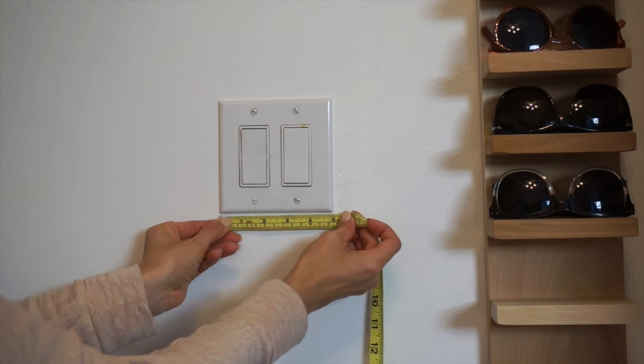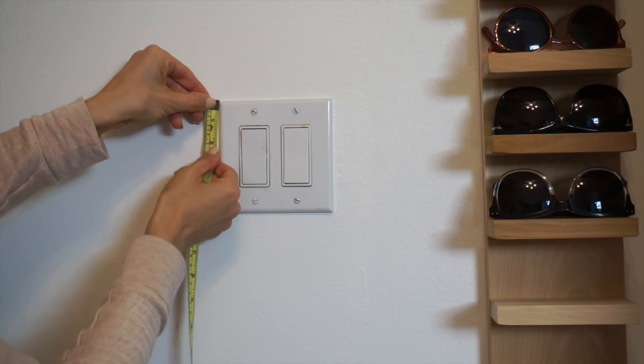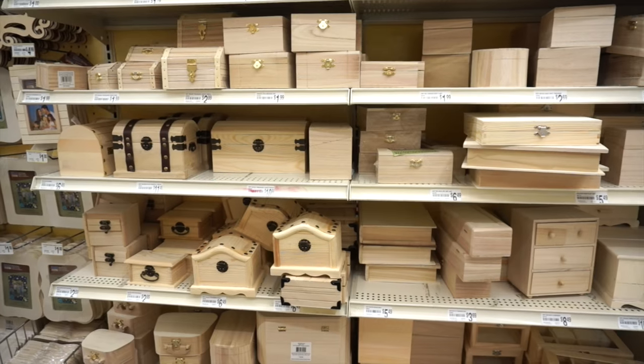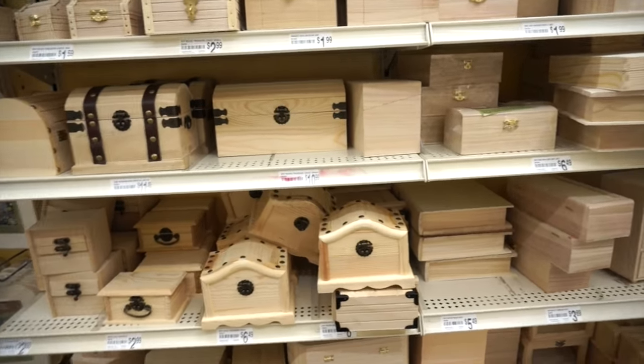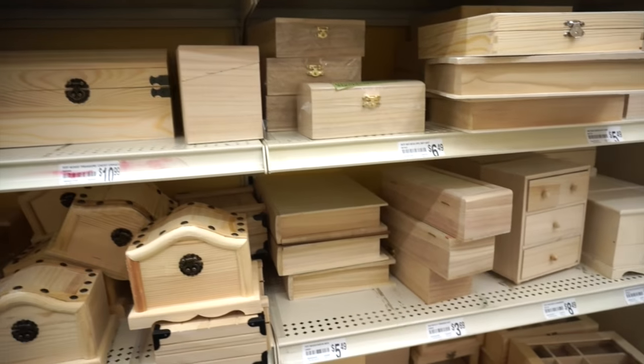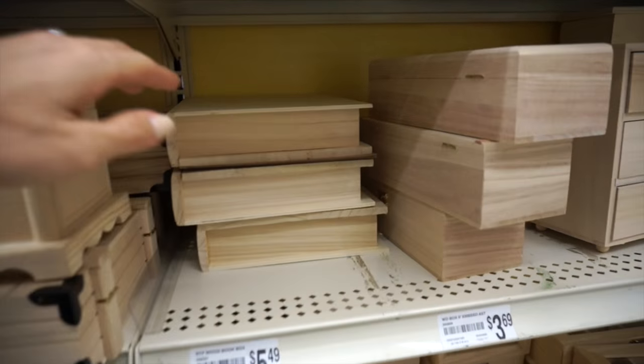Your first step is going to be to measure the faceplate just to see how big of a box you're going to need. Then I went to Michaels and they have a very nice selection of boxes, and you're going to look for one that has a hinge on the side.